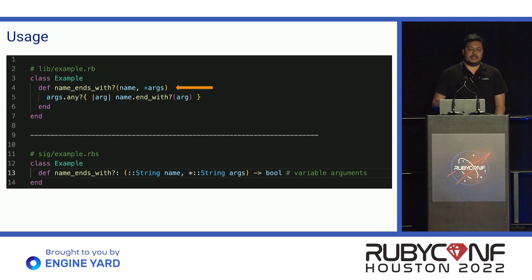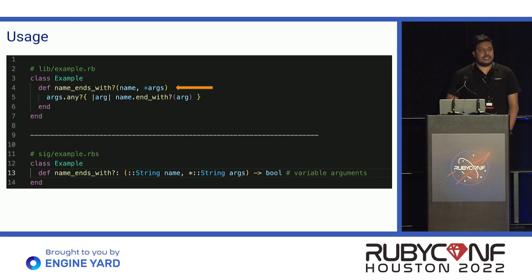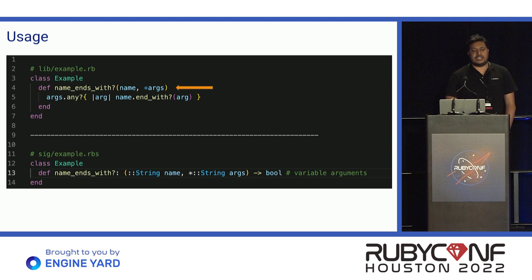Let's take another example where a function can have a variable number of arguments. We have an example class with a function name_ends_with that accepts a fixed name argument and then a variable number of arguments using the splat operator. At line 13, the first argument is fixed — you must always provide name when calling this function — but using the splat operator, it will accept a variable number of additional arguments. The return type is boolean because the function checks whether the name ends with a particular value or not.